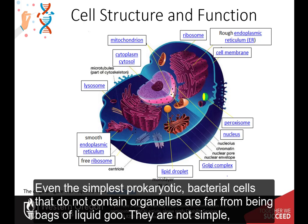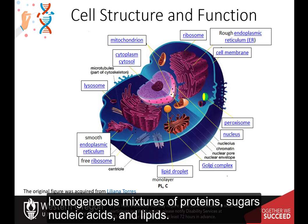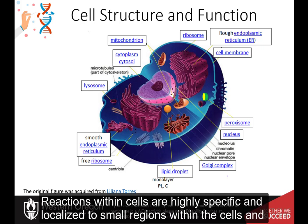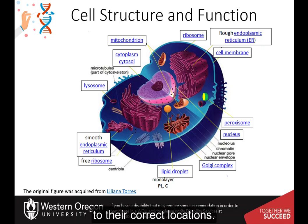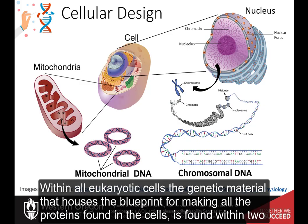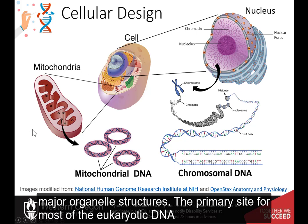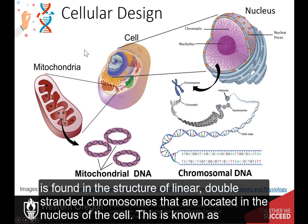Even the simplest prokaryotic bacterial cells that do not contain organelles are far from being bags of liquid goo. They are not simple homogeneous mixtures of proteins, sugars, nucleic acids, and lipids. Reactions within cells are highly specific and localized to small regions within the cells, and are carried and transported by specific cellular machinery to their correct locations. Within all eukaryotic cells, the genetic material that houses the blueprint for making all the proteins found in the cells is found within two major organelle structures. The primary site for most of the eukaryotic DNA is found in the structure of linear double-stranded chromosomes that are located in the nucleus of the cell.